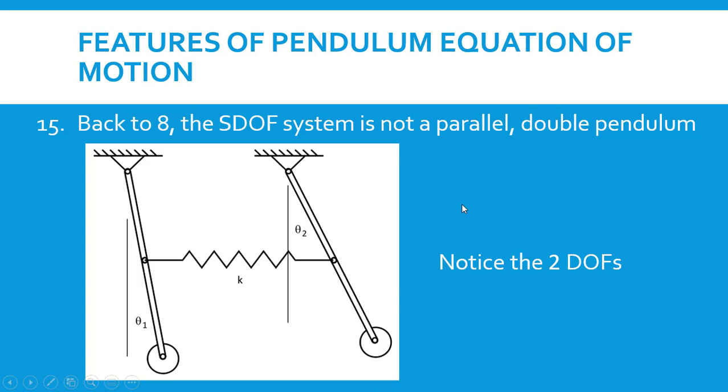So these two systems are examples of multiple degree of freedom systems compared with the single degree of freedom system that we have in a simple pendulum.